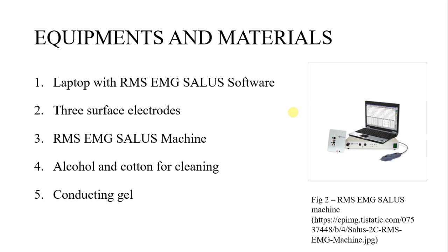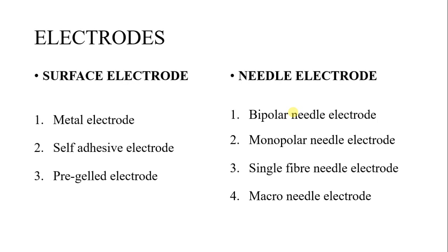There are two types of electrodes used. First are surface electrodes, which are non-invasive, and second are needle electrodes, which are invasive. The three most commonly used surface electrodes are metal electrodes, self-adhesive electrodes, and pre-gel electrodes. Needle electrodes include bipolar electrodes, monopolar needle electrodes, single fiber needle electrodes, and macro needle electrodes.